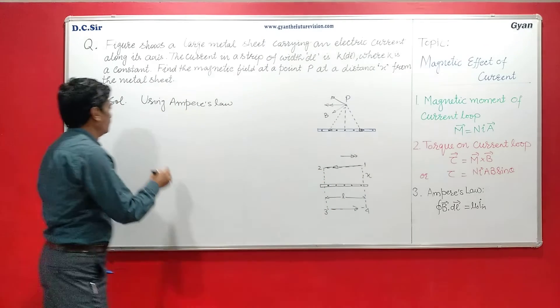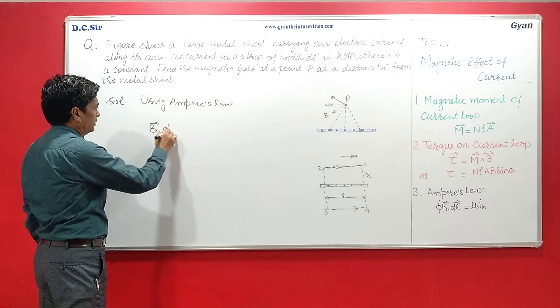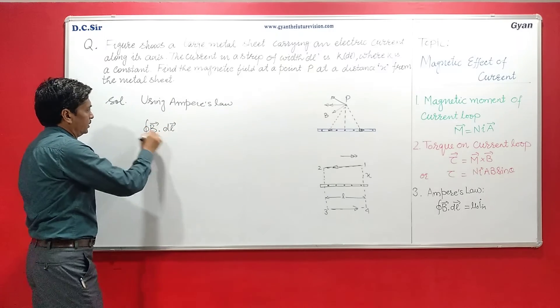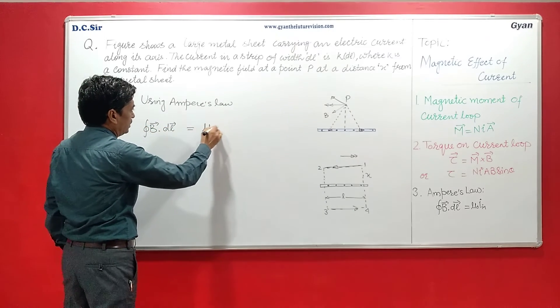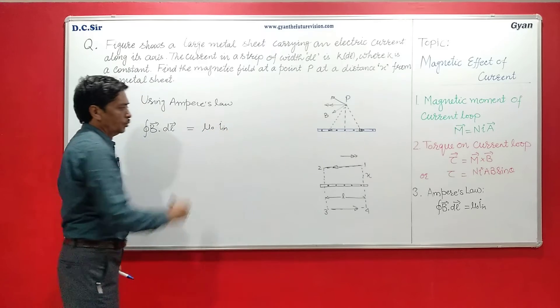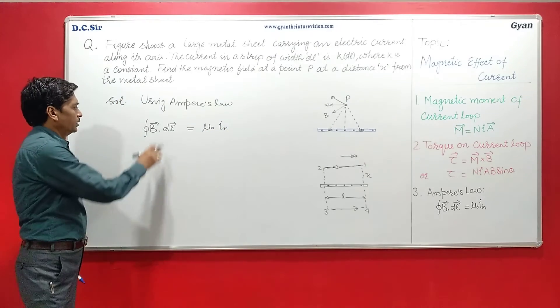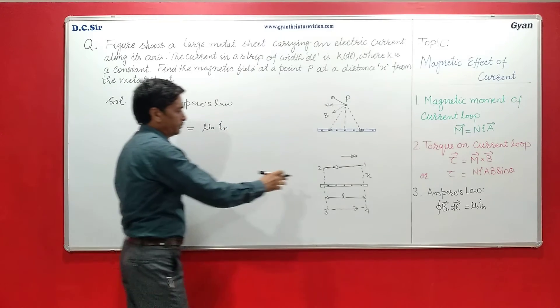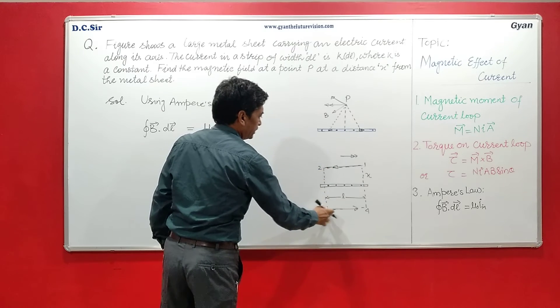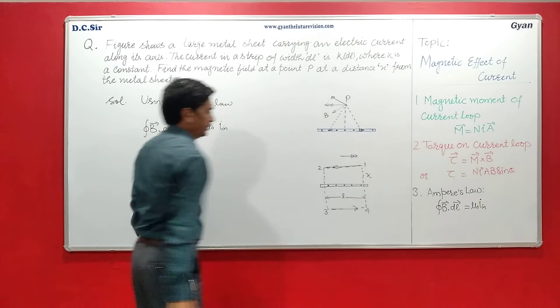Now this ∮ B·dL can be written in the 4 parts from 1 to 2, 2 to 3, 3 to 4 and 4 to 1.